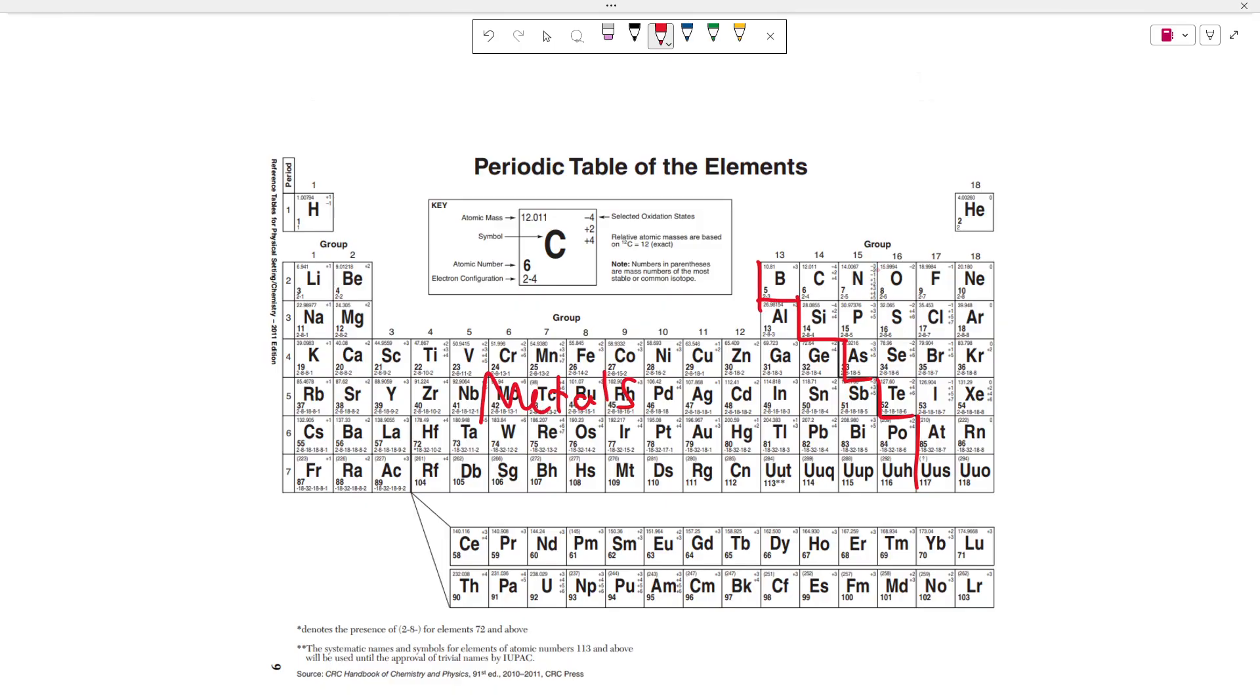And your non-metals are going to be located to the right of this. And remember that hydrogen is a non-metal, so technically it's also grouped with the elements on this side, even though it's written over here. So metals and non-metals are going to form ionic bonds between them.